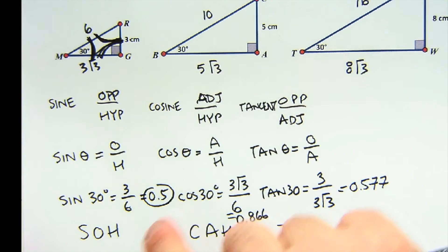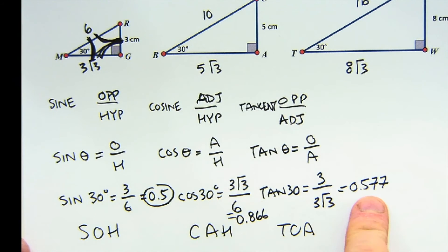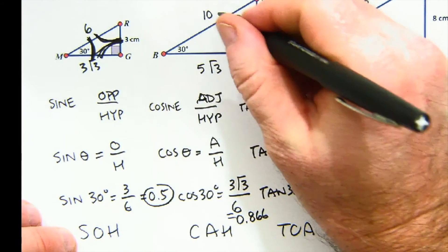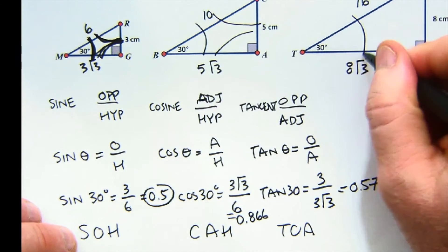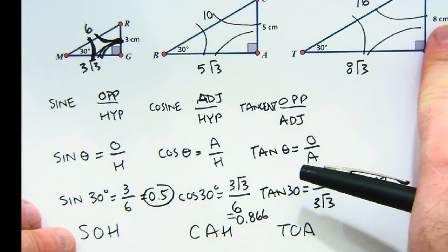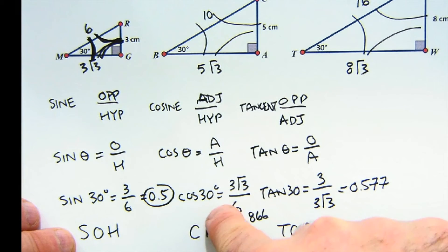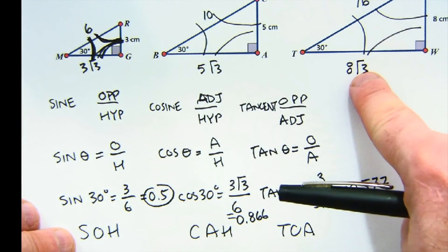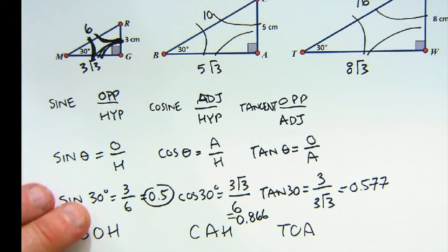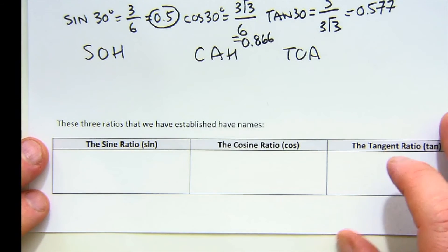Now understand that while I used this particular triangle to get these three ratios, because the proportionality is the same, the ratios of all similar triangles would match. Right — 5 is to 10 would be a half, 8 to 16 would be a half. For cosine it would be 5 root 3 to 10 or 8 root 3 to 16 — they would all still produce the same number.